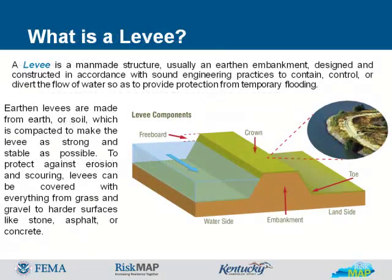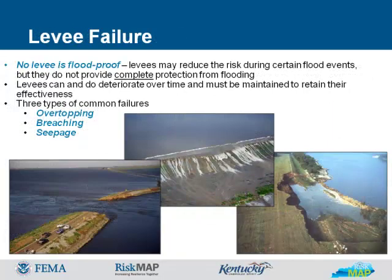What is a levy? A levy is a man-made structure, usually an earthen embankment, designed and constructed in accordance with sound engineering practices to contain, control, or divert the flow of water so as to provide protection from temporary flooding. Earthen levies are made from earth or soil, which is compacted to make the levy as strong and stable as possible. To protect against erosion and scouring, levies can be covered with everything from grass and gravel to harder surfaces like stone, asphalt, or concrete.